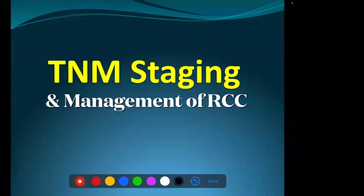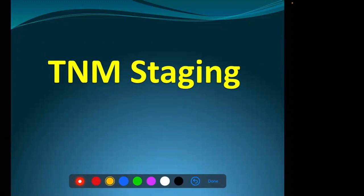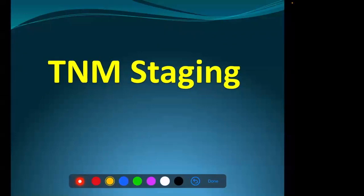Staging means by different investigations and clinical examination, we almost try to confirm the location of the tumor. We want to see whether the tumor is still inside the organ or has gone to other organs, or if the tumor has involved the lymph nodes or not. Basically, we want to know whether it is an early stage localized tumor, a locally advanced tumor involving surrounding structures, or a tumor that has already metastasized to a distant organ or distant lymph node.